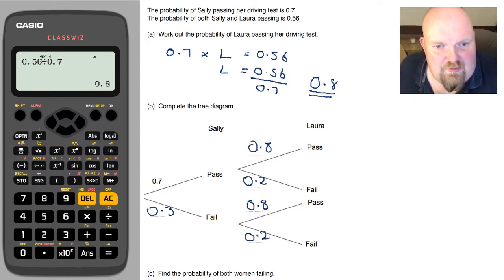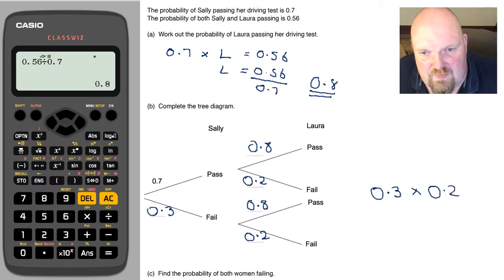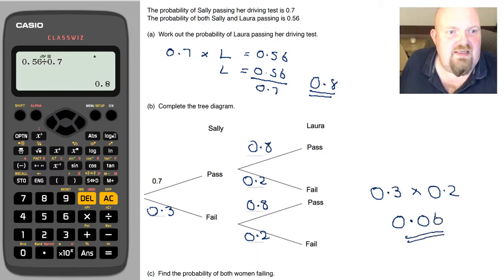So that's the tree diagram completed. And then it says, find the probability of both women failing. Well, the probability of Sally failing is 0.3, and the probability of Laura failing is 0.2. 0.3 times 0.2 is 0.06. So my final answer is 0.06.